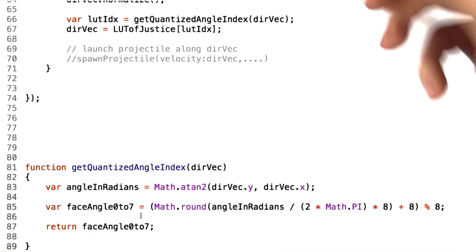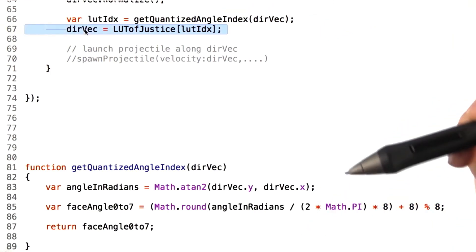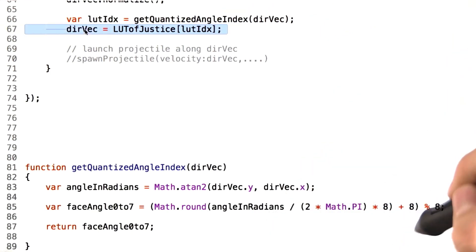That 0 to 7 value is passed back and used as an index inside of our lookup table. The result gives us a directional vector that matches exactly what keyboard players can use.